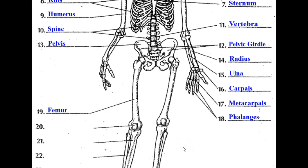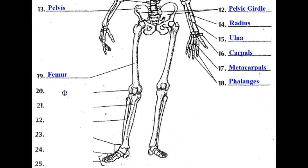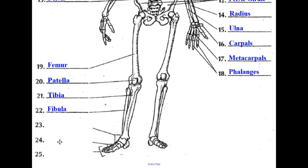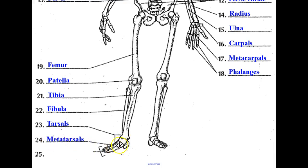Your thigh bone is called the femur. Your kneecap is called the patella. The big bone in your lower leg is called the tibia, and the smaller bone is called the fibula. Notice the connection between hand and foot: carpals for the hand, tarsals for the foot — the bones in your ankle. The metatarsals are in your foot leading to your toes, which would be the phalanges.